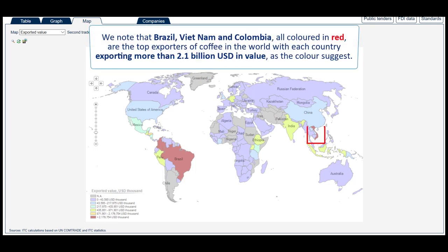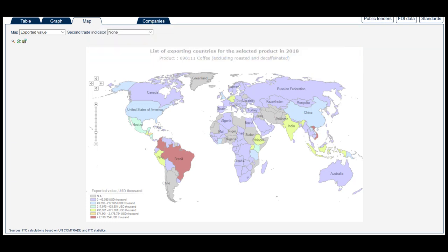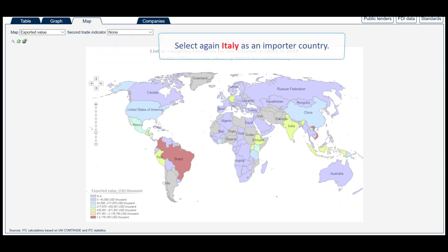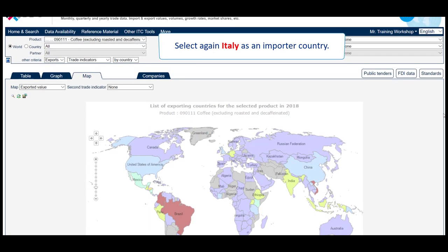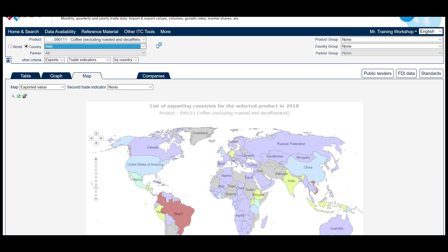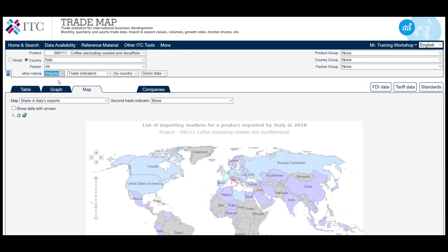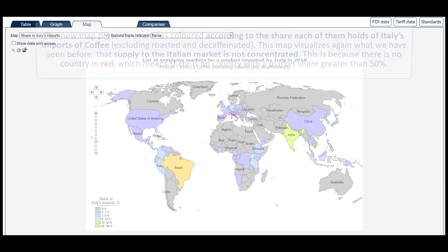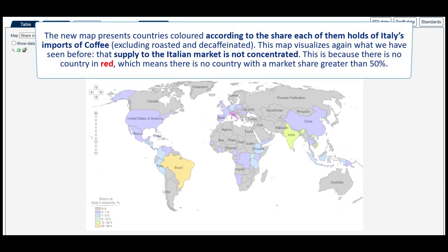Looking at the map, we note that Brazil, Vietnam and Colombia, all coloured in red, are the top exporters of coffee in the world, with each country exporting more than 2.1 billion US dollars in value, as the colour suggests. To better analyse the map features, let's select Italy as an importer country. To do so, you just need to select Italy again in the country field and choose Imports. The new map presents countries coloured according to the share each of them holds in Italy's imports of coffee, excluding roasted and decaffeinated.